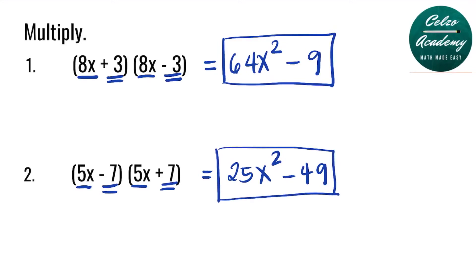The answer will always be a difference of perfect squares. Again, the other way of doing this is step 1: square the first term, minus square the second term.